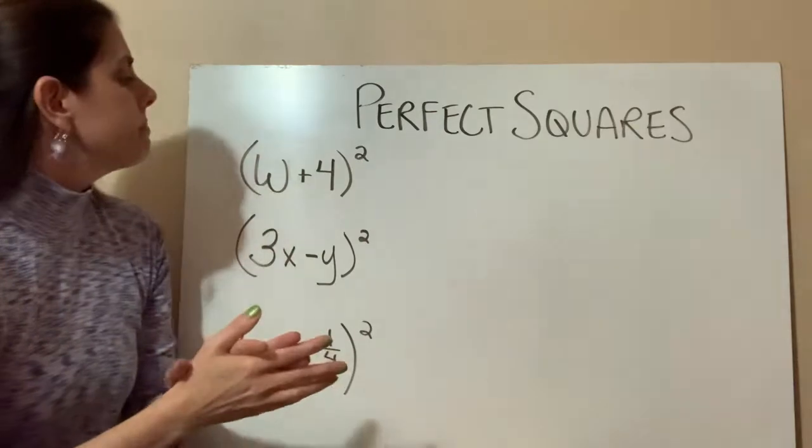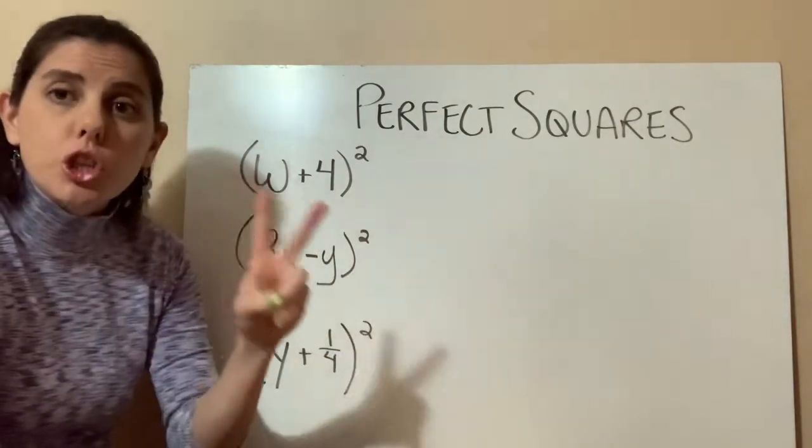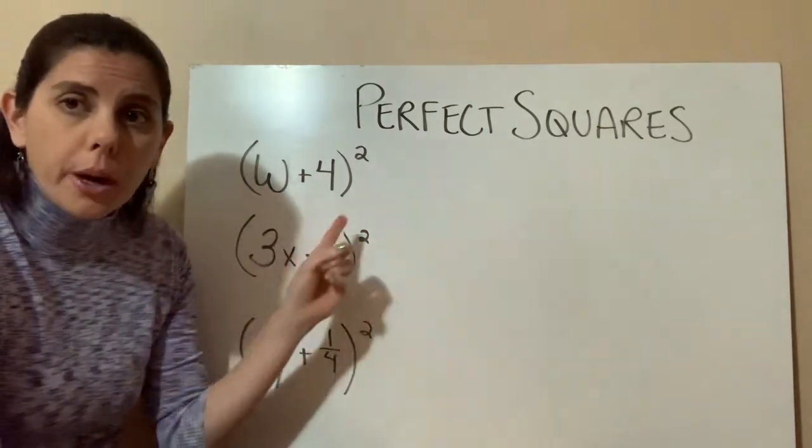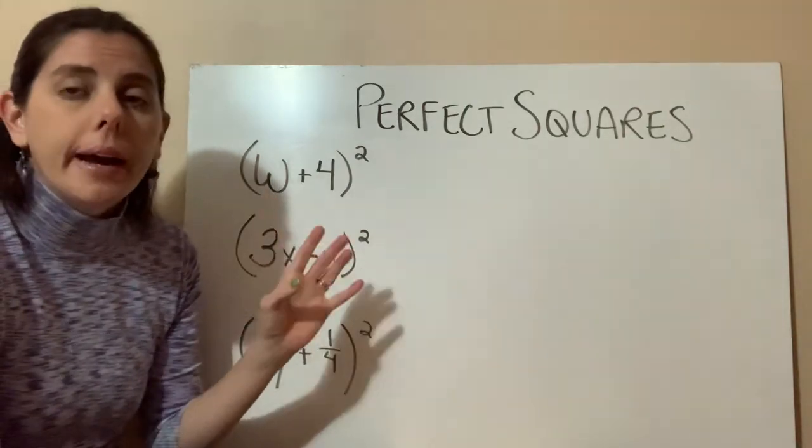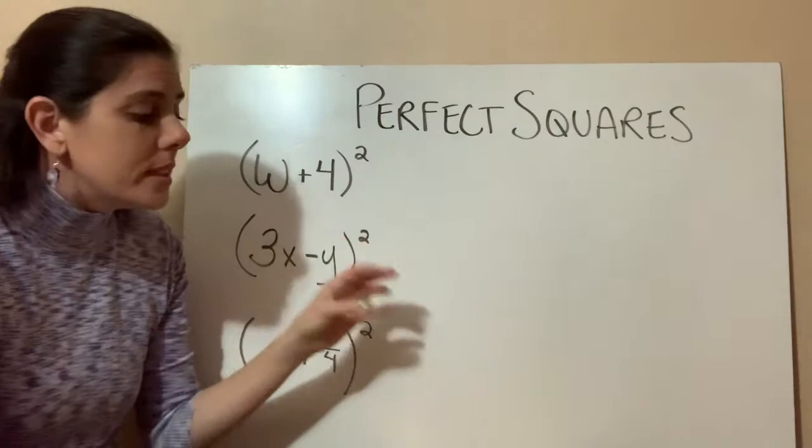But in these, each of these has two terms. So when the expression that's inside the parentheses is a binomial or larger, what you have to do is a little different.